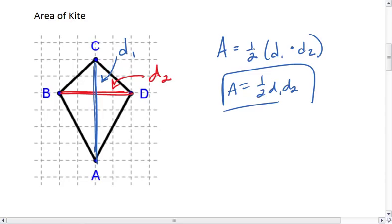We have this formula that the area of a kite is 1/2 D1 times D2, but we want to figure out why that's the case.